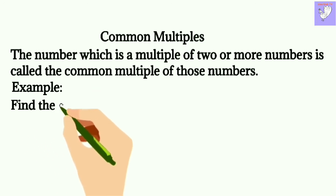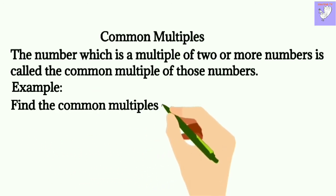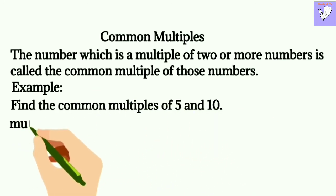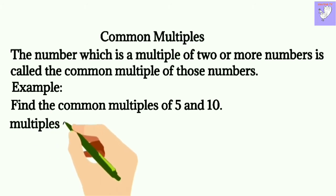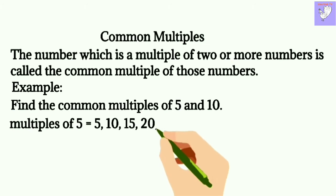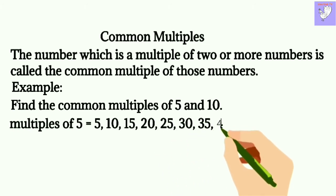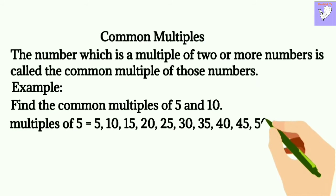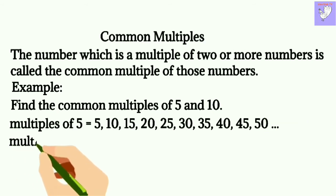For example, let's find out the common multiples of 5 and 10. The multiples of 5 are 5, 10, 15, 20, 25, 30, 35, 40, 45, 50 and so on.